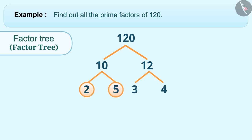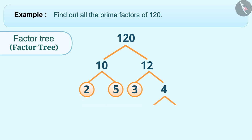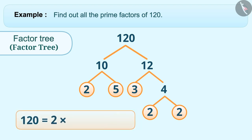Since 2, 3, and 5 are prime numbers, they cannot be divided further — the branches of the factor tree cannot go further. But 4 can be divided: its factor pair is 2 and 2. Thereafter the branches cannot be extended. We can now express 120 as 2 × 2 × 2 × 3 × 5. To find the prime factors of any number, divide it into branches until all values are prime numbers.